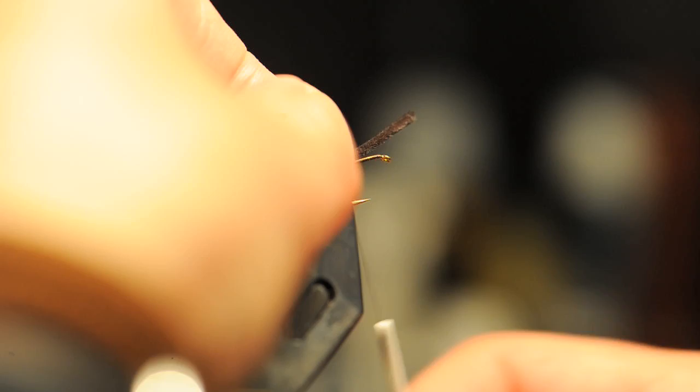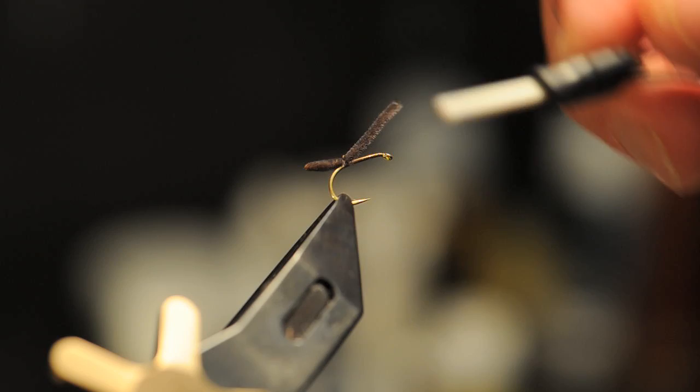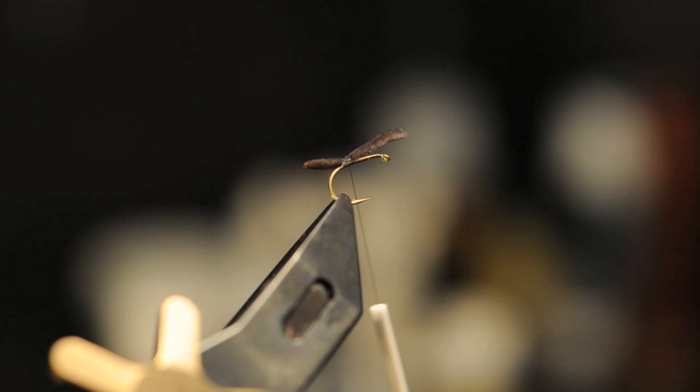Tie it in so that the Micro Polish Nile extends a bit beyond the hook bend. There we have a nice BBO abdomen.